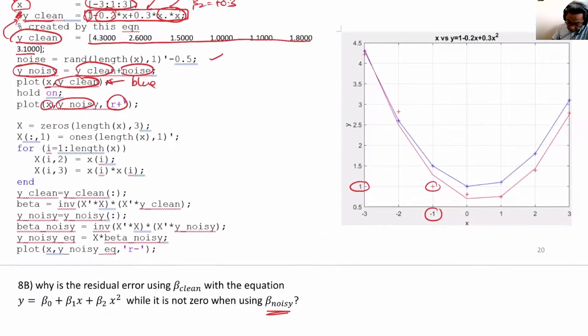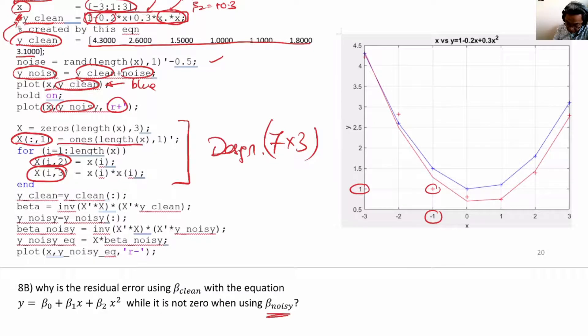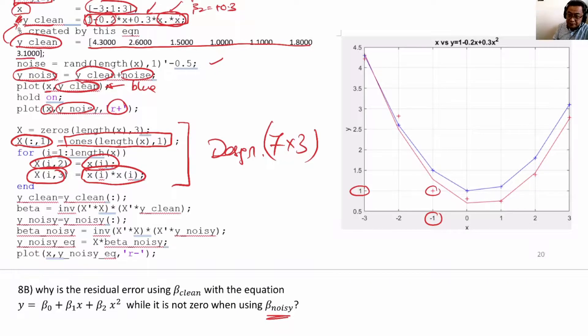This forms the design matrix. Study it well so you can see that the design matrix is a seven by three rectangular matrix. The first column of x is all ones, the second column of x takes from the x array, and the third column of x takes from the x square array. We then solve for β_clean.